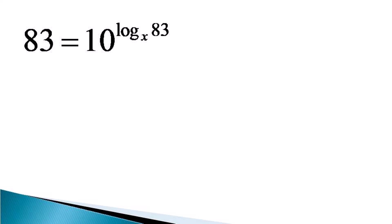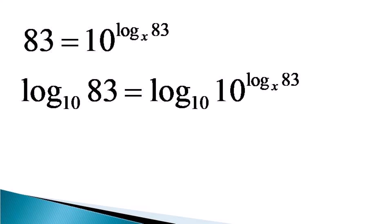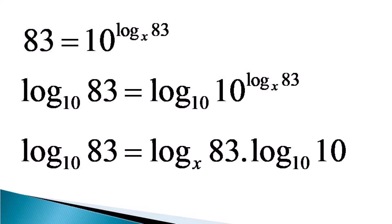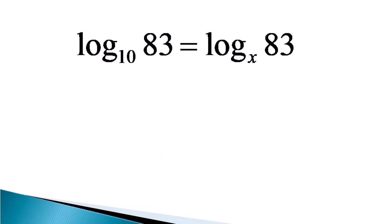Now we take the log of both sides to the base 10, which makes the equation log of 83 to the base 10 equal to log of 10 raised to the power log 83 to the base x, to the base 10. Applying the power law of logarithms, this becomes log of 83 to the base 10 equal to log of 83 to the base x multiplied by log of 10 to the base 10. Since log of 10 to the base 10 is unity, log of 83 to the base 10 becomes equal to log of 83 to the base x.